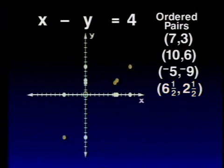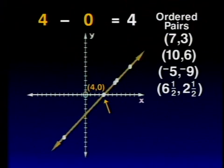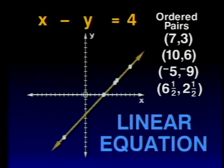Do you notice anything special about these points? That's right — they all seem to lie in a straight line. Let's test that theory. What coordinates would be associated with this point? That's correct: (4, 0). Is that a solution? Yes, it is. Now we have a pattern we can be quite confident with. Every solution to this equation can be represented by points on this line, and every point on this line represents a solution to the equation. That's why this type of equation is called a linear equation. And that understanding makes this way of showing the solution set of a first degree equation with two placeholders much simpler.